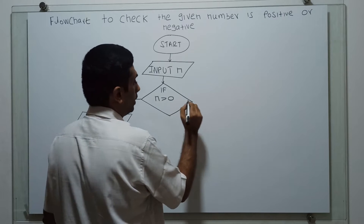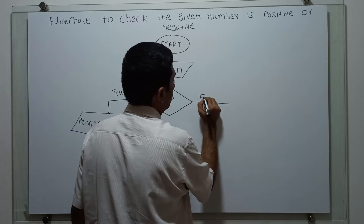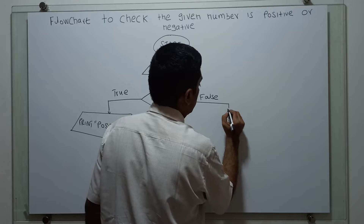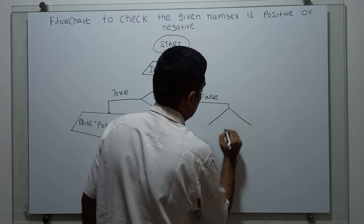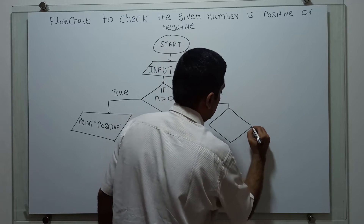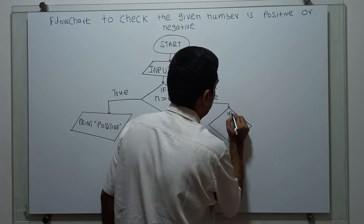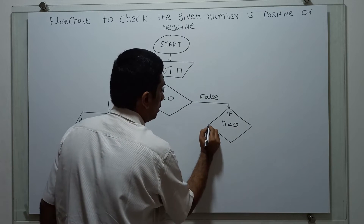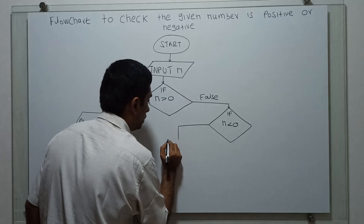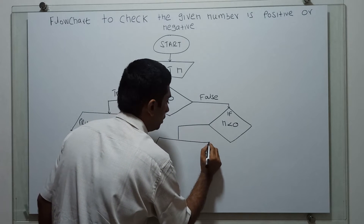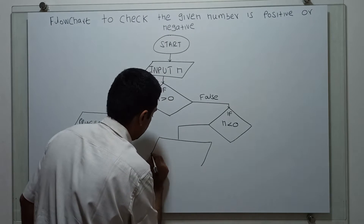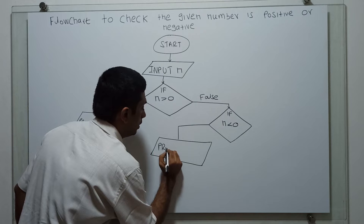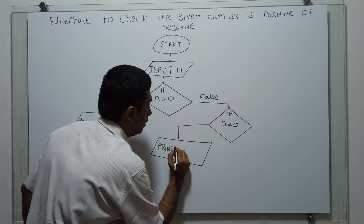If n greater than 0 is false, I am checking if n is less than 0. If it is true, I am printing n is negative. Print negative.